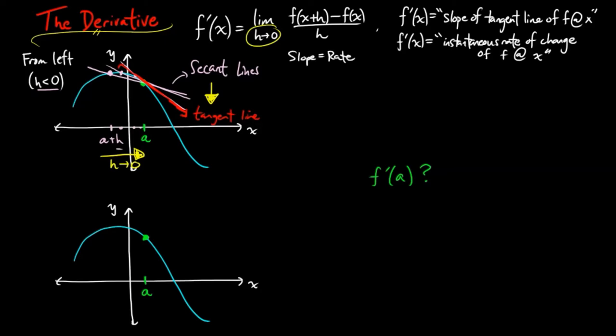The slope of a secant line is delta y over delta x, where delta y is the change in y, which is f(a+h) - f(a). Here is delta y of the first secant line we drew. And here is delta x, the change in x, which is a+h - a, giving us just h.